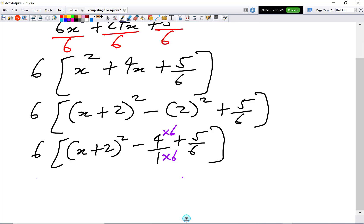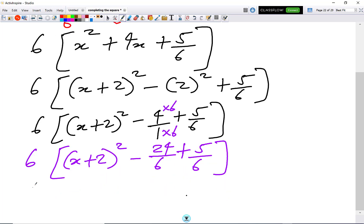And this now will give me 6 on the outside. I will get (x + 2)² - 24/6 + 5/6. And then I will get 6(x + 2)². So -24 + 5 will give me -19. So it's -19/6 there.